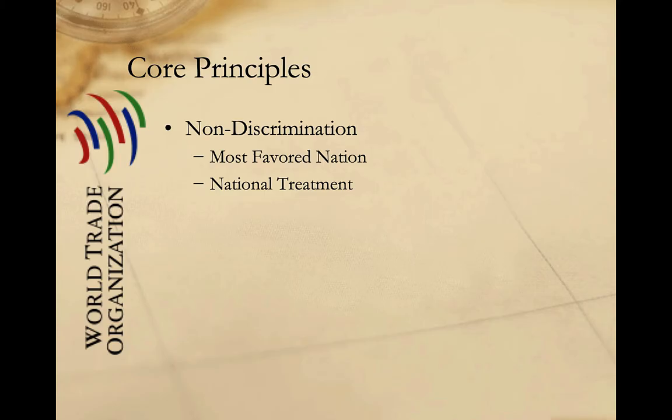In other words, you cannot offer preferential market access to one state in the WTO without giving it to all members. The second is national treatment. This means that goods produced by other WTO member states and imported into your country must be treated no less favorably than goods produced domestically. You cannot impose different technical standards, safety, or security requirements, or other measures that may disadvantage foreign producers. Taken together, most favored nation and national treatment are the two most important carrots for WTO membership.